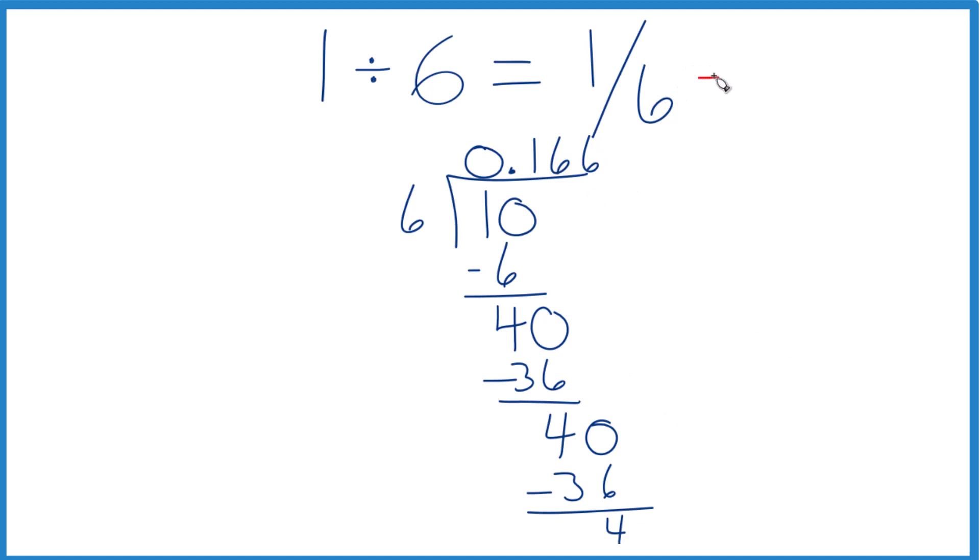So we could write this as 0.16 with the 6 repeating, and that would be the most accurate way to write it. So 0.166666 just keeps going. You could round it to 0.167, and your teacher might be okay with that. But I'd probably go with this up here. I think it's more accurate.